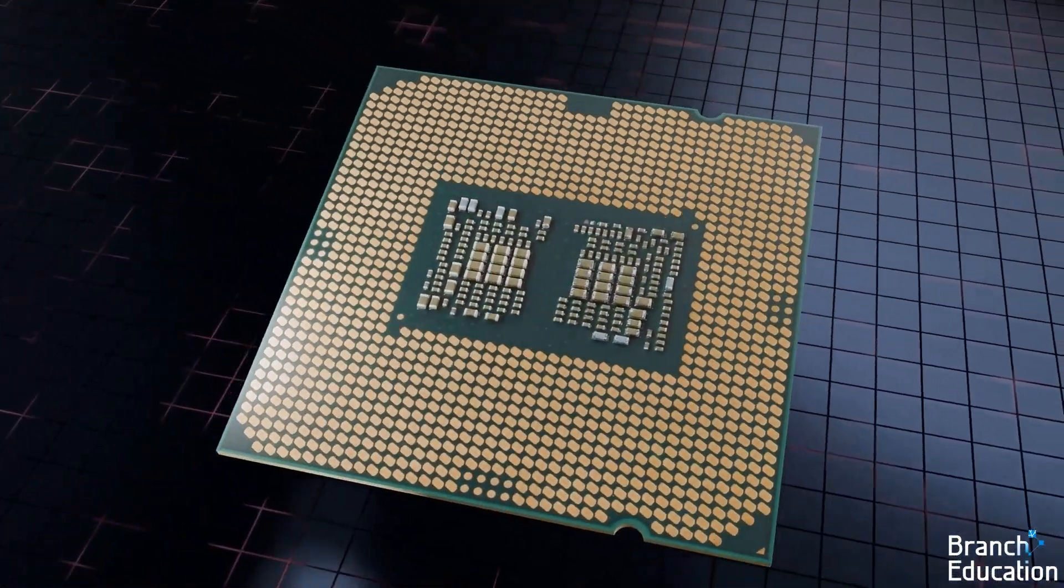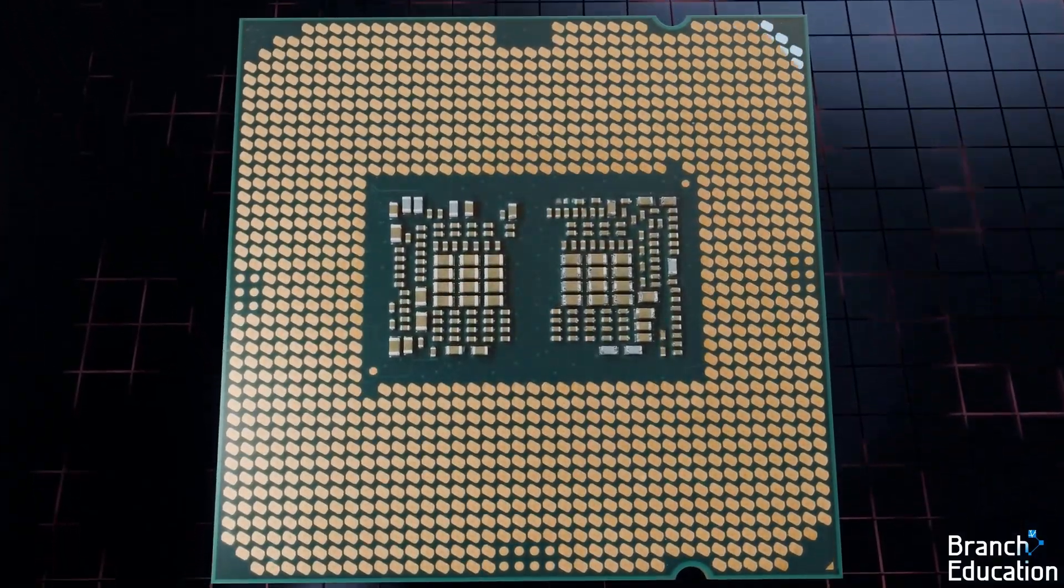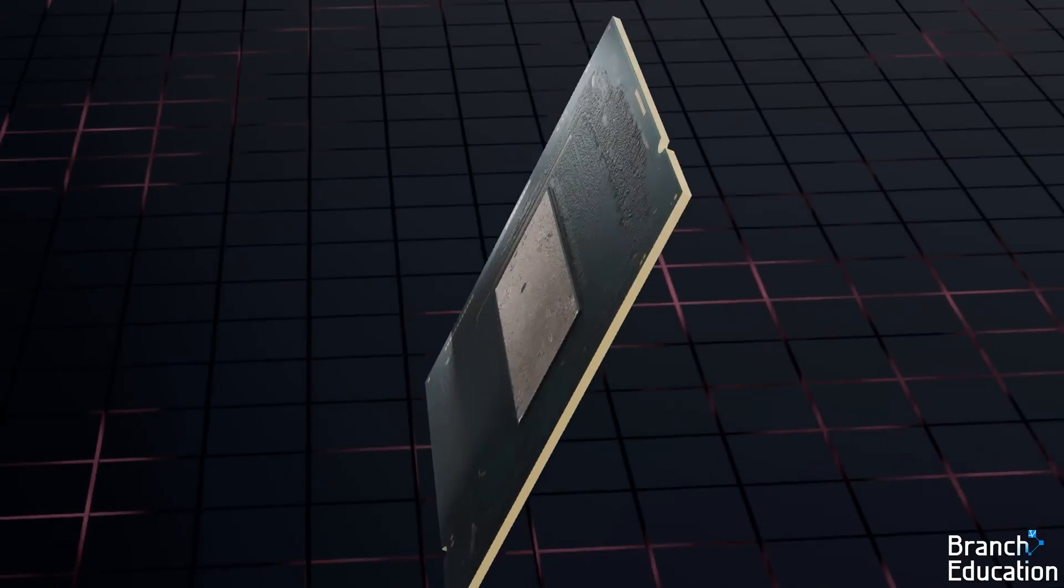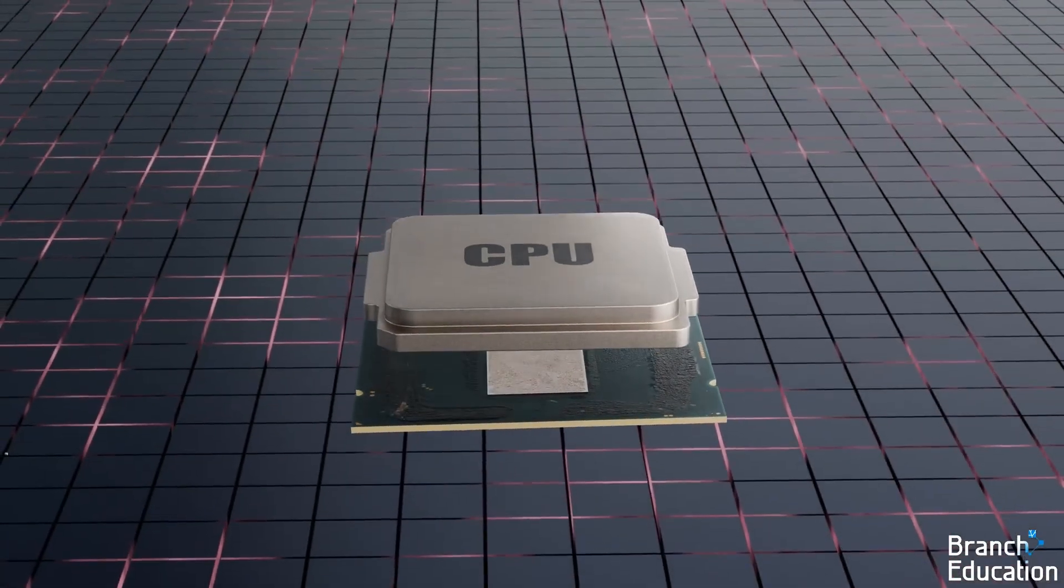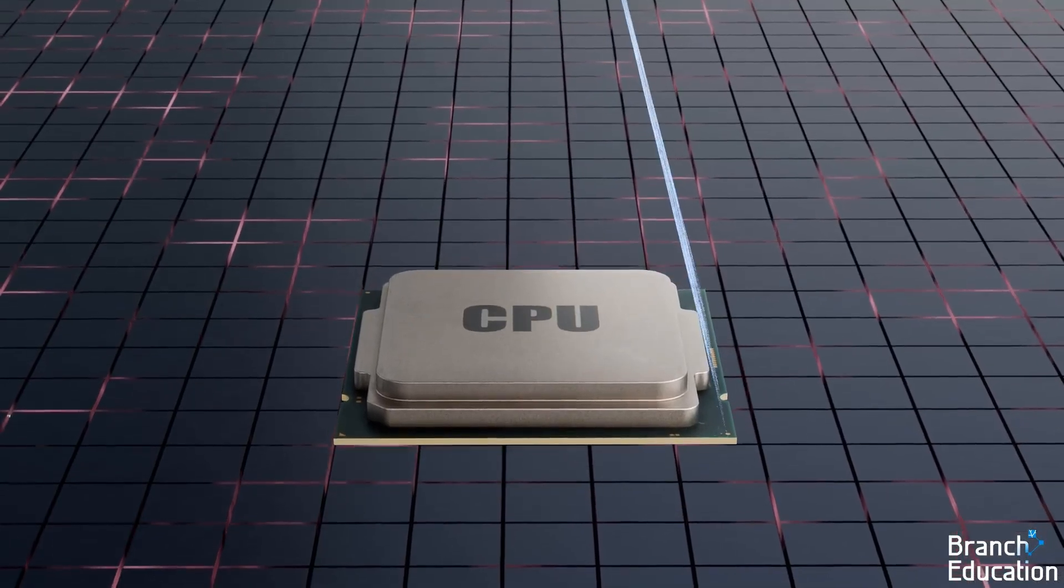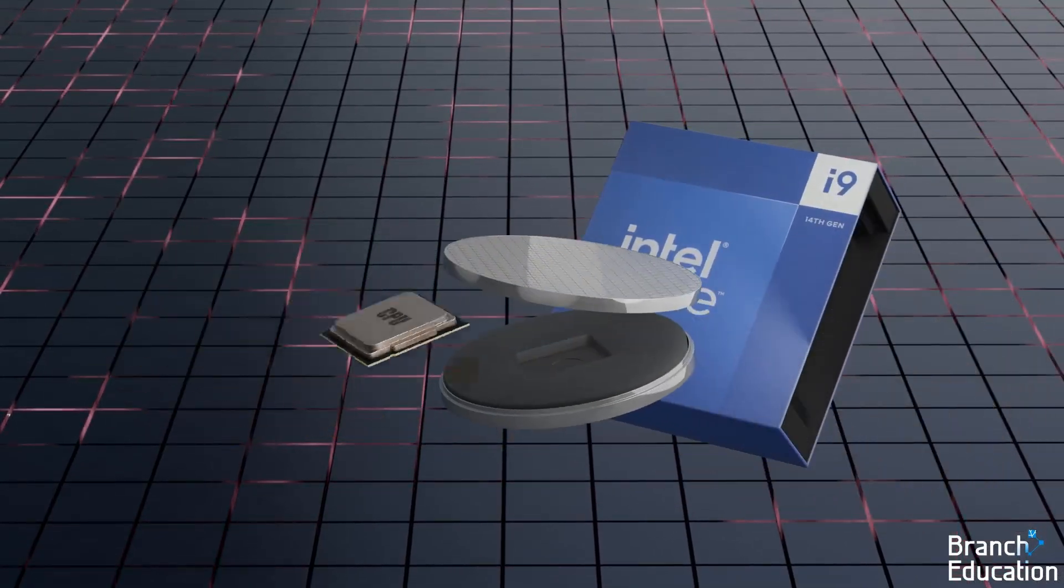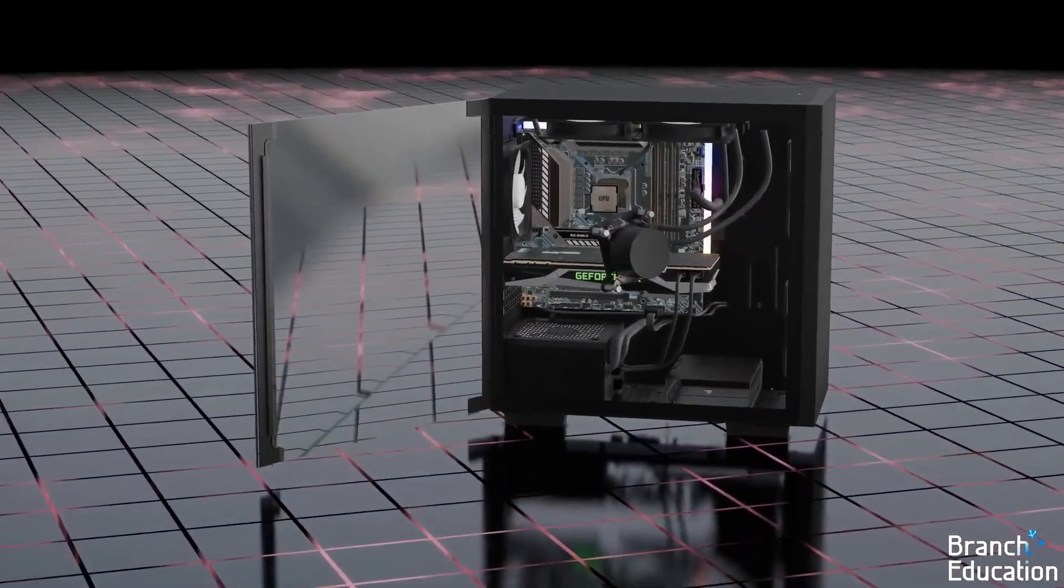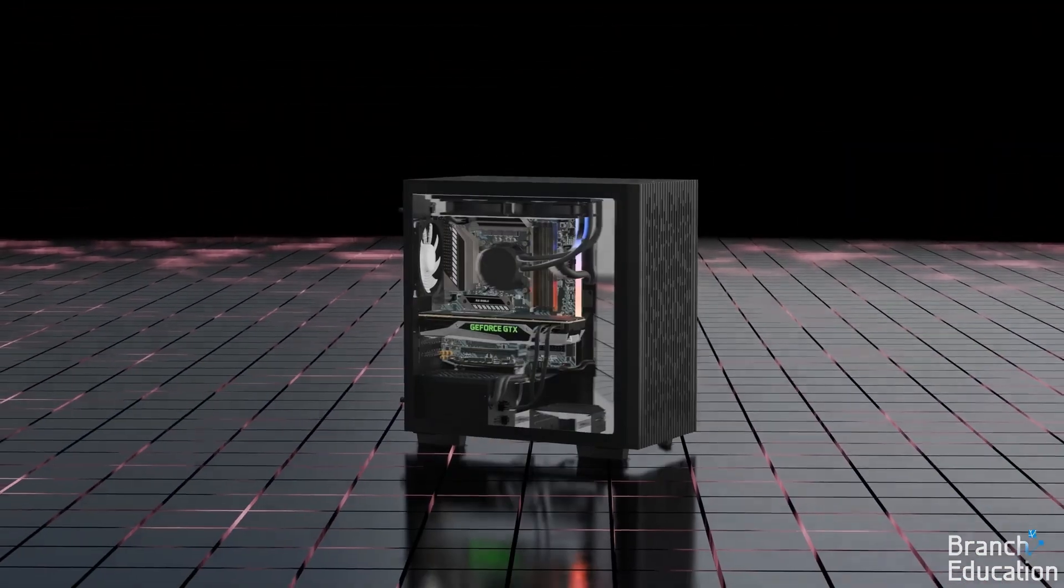The printed circuit board holds the landing grid array that interfaces with the motherboard, as well as various electrical components. Next, an integrated heat spreader is mounted on top, and the entire assembly is tested one last time before being packaged for sale. Finally, the CPU is now ready to be mounted onto the motherboard and installed into your desktop computer.